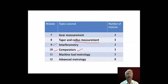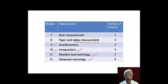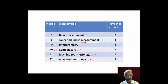In module number eleven, we will be discussing about different alignment tests conducted on lathe and drilling machines. Finally, we will move to advanced metrology wherein we will be discussing about universal measuring machines, coordinate measuring machines, in-process gauging, stage position metrology, nanotechnology instrumentation such as atomic force microscopy, and optical system designing.